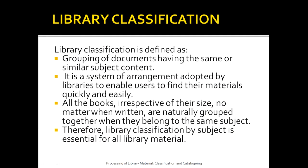Library classification has been defined by several experts in various ways. One very important definition is the grouping of documents having the same or similar subject content. Library classification is also a system of arrangement adopted by libraries to enable users to find their material quickly and easily. All the books in the library, irrespective of their size and no matter when written, are naturally grouped together when they belong to the same subject. Therefore, library classification by subject is essential for all library material.